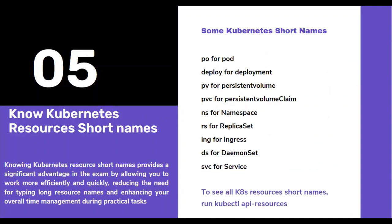Tip number five: know Kubernetes resources short names. Knowing Kubernetes resources short names provides a significant advantage in the exam by allowing you to work more efficiently and quickly, reducing the need for typing long resource names and enhancing your overall time management. For instance, I can't remember the last time I typed 'deployment' in full — the short name is 'deploy'. To view your persistent volume claim, just type 'k get pvc'.